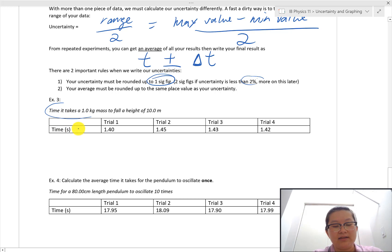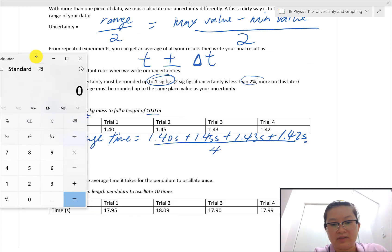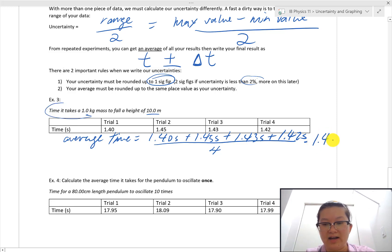So we have here the experiment that we did for a one kilogram mass to fall a height of 10 meters. So we don't really care about these numbers right now. Right now, we just want to report out our average time. So let's do that first. So our average time, we're going to add the four numbers and then divide by four. I get 1.425 and at this point, I'm not going to do any rounding right now. I don't even round to however many significant figures I had originally because that rounding is going to be determined by my uncertainty. So no rounding right now.